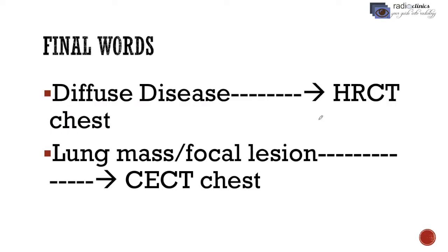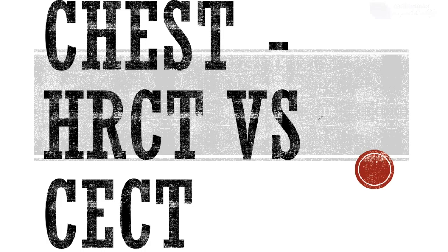So you might have got the point now. Final words: if you need to evaluate diffuse lung disease, you need to do an HRCT scan, and if you need to evaluate a lung mass or focal lesion in the lungs, then you need to do a contrast enhanced CT scan. Thank you.